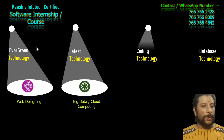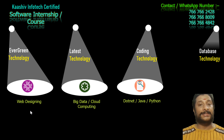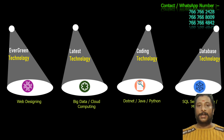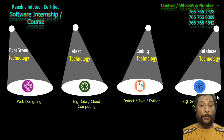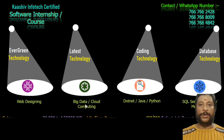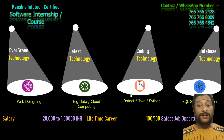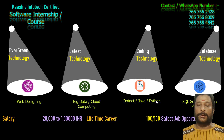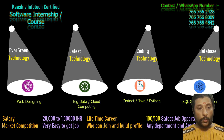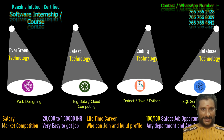Learn some evergreen technology — website designing is one. Learn big data and cloud computing as latest technologies. Learn any one programming language — .NET, Java, or Python. And learn some database technology like SQL Server, Oracle, or MongoDB. If you learn all four, the job is yours.